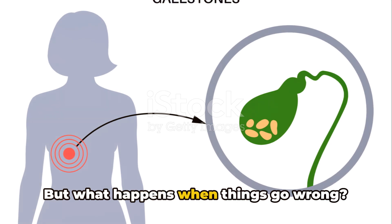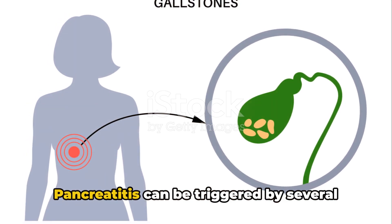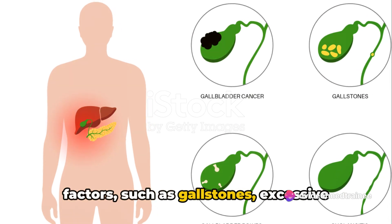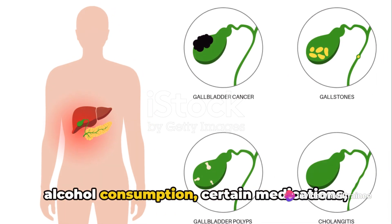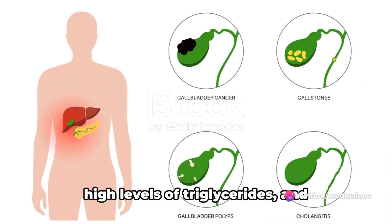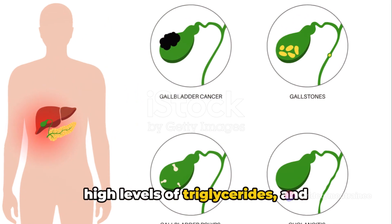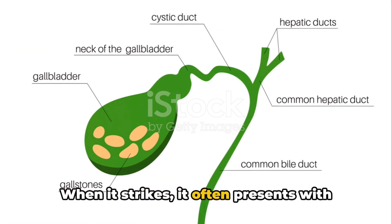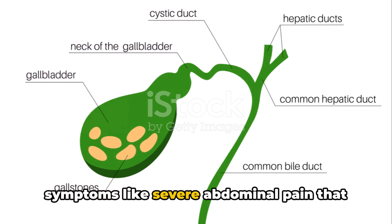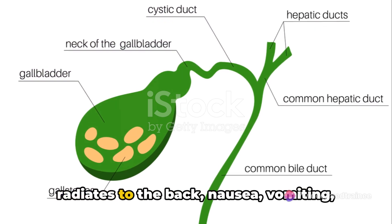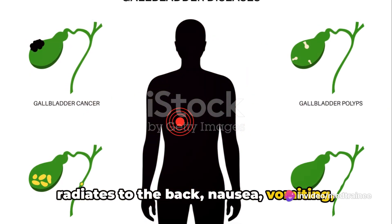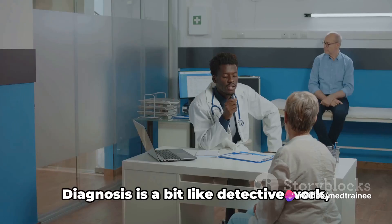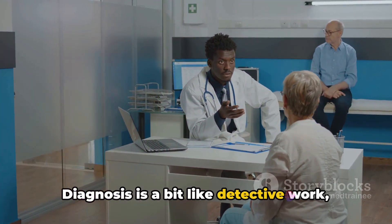But what happens when things go wrong? Pancreatitis can be triggered by several factors, such as gallstones, excessive alcohol consumption, certain medications, high levels of triglycerides, and abdominal trauma. When it strikes, it often presents with symptoms like severe abdominal pain that radiates to the back, nausea, vomiting, fever, and an elevated heart rate.